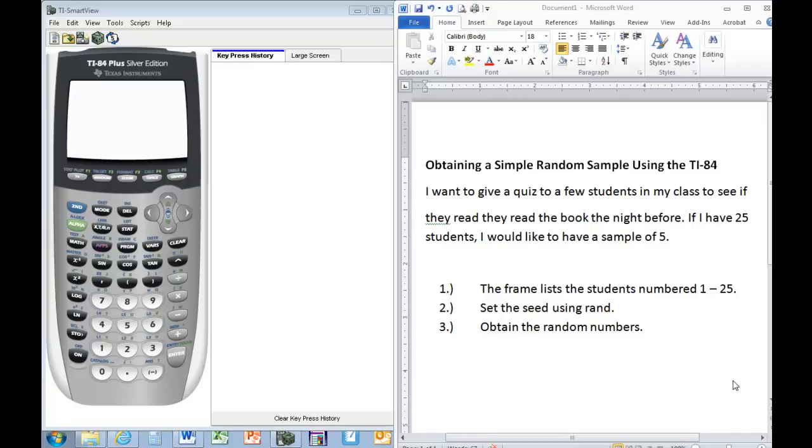If I want to give a quiz to 5 out of my students and have a total of 25, I can use the calculator to do this. The first thing we want to do is list the frame, and I would just number each of my students from 1 to 25.